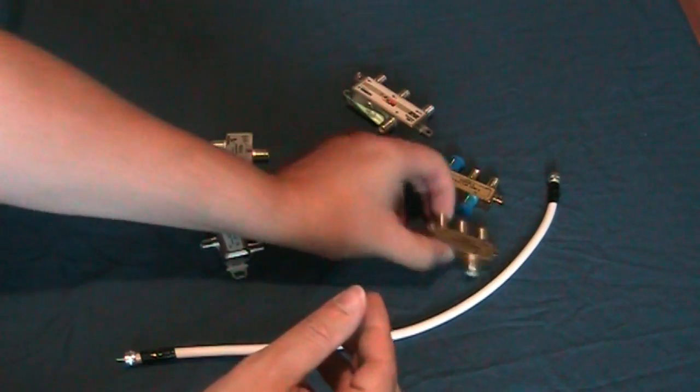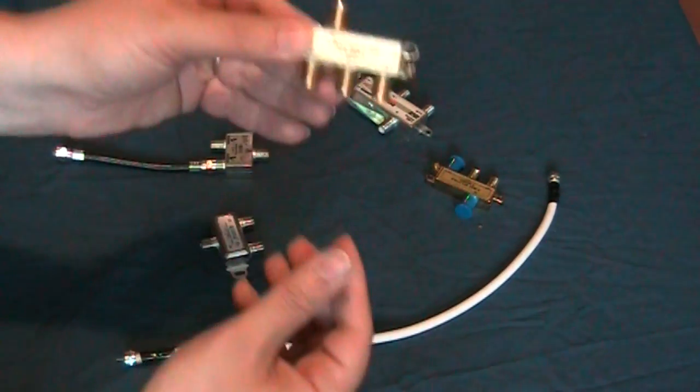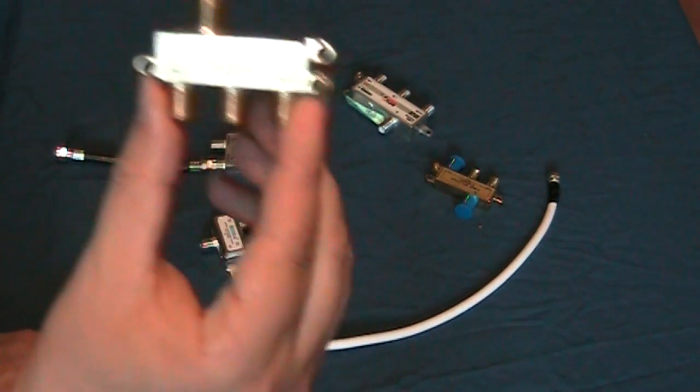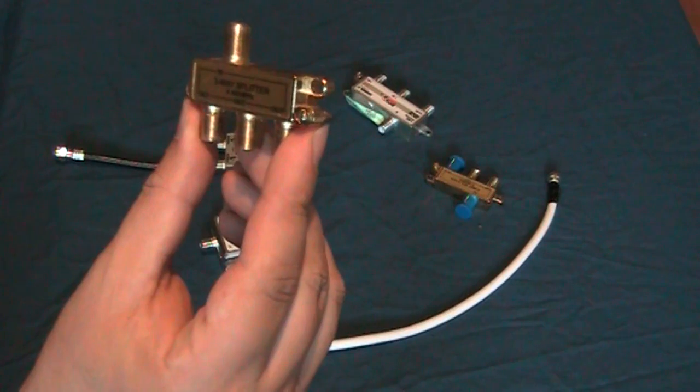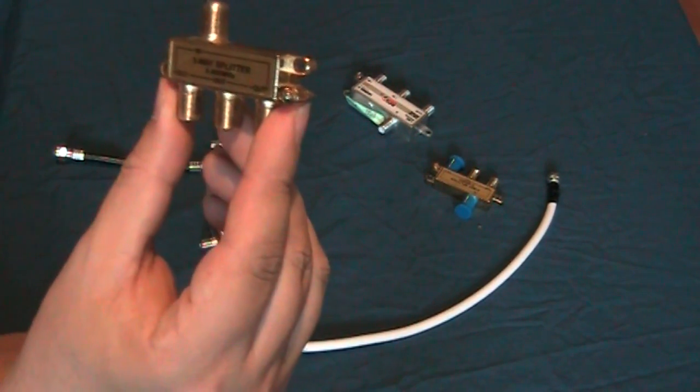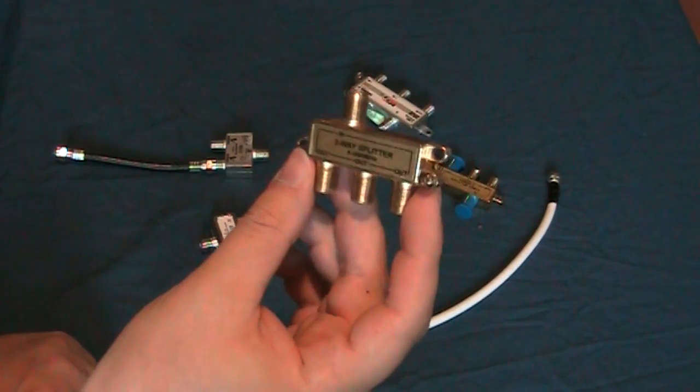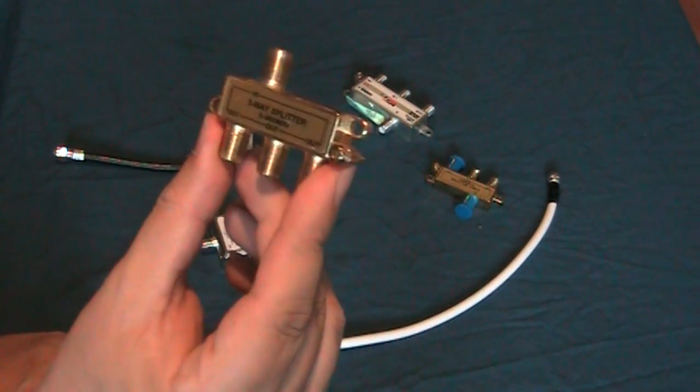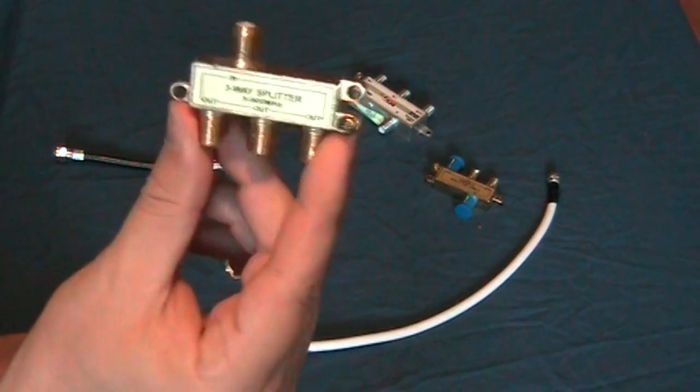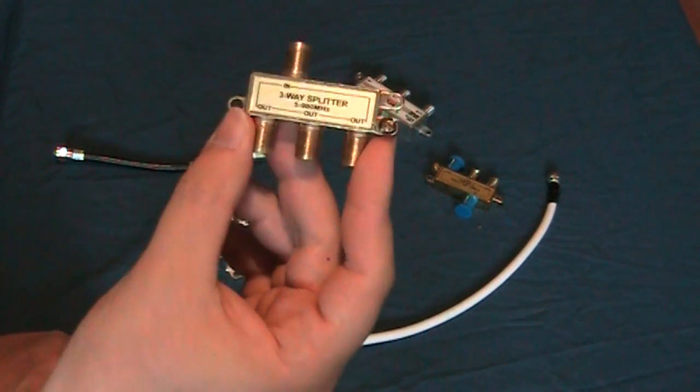Then there's cable splitters. This is just simply a regular splitter. I don't know if it'll work with a satellite or not - I haven't really tried it. I just use an appropriate one for satellites that has the power pass-through. I use these for my aerial because I have a rooftop aerial and I run it to different TVs throughout the house.